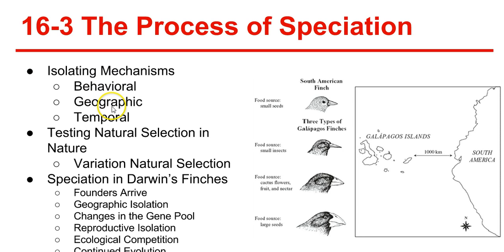Geographic isolation is when two populations are separated by geographical barriers such as mountains, rivers, or bodies of water. Temporal isolation is when species reproduce at different times of the year — it is very similar to behavioral isolation.